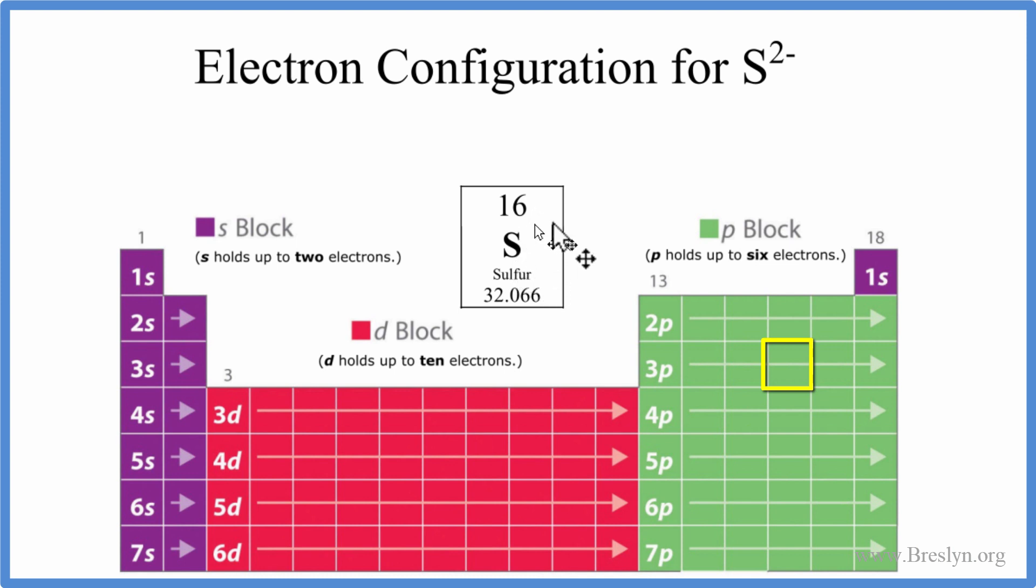They don't have a plus or a minus sign up here, like we do with this sulfide ion. So because of that, we have the atomic number here, which is the number of protons. In a neutral element, the number of protons equals the number of electrons. So we know we have 16 electrons here to write our electron configuration.